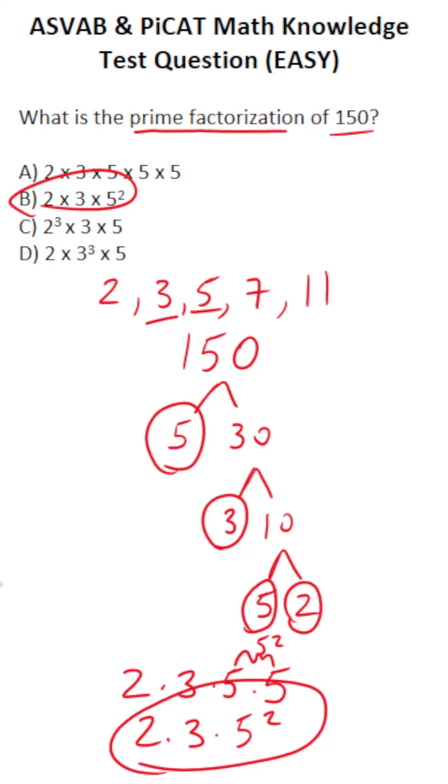And again, if you don't want to use the factor tree to figure this one out, you can quickly multiply all this out and it will get you 150. 2 times 3 times 5 squared: 2 times 3 is 6, 5 squared is 5 times 5 or 25, 6 times 25 is 150. Therefore, I'm confident that we identified the correct prime factorization of 150.